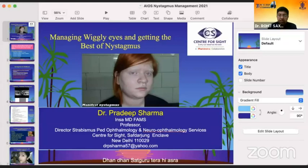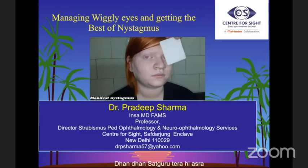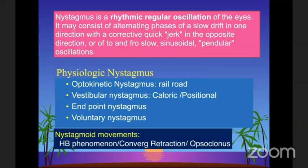Dr. Pradeep Sharma will speak on managing wriggly eyes and getting the best of nystagmus evaluation. Nystagmus is a rhythmic, regular oscillation of the eyes. We should always rule out physiologic nystagmus — optokinetic, vestibular endpoint, or voluntary nystagmus — and distinguish nystagmoid movements, which are irregular and non-rhythmic, such as the opsoclonus or convergence retraction nystagmus.